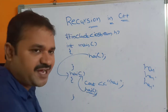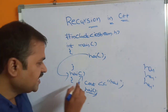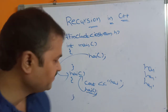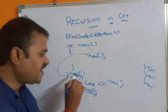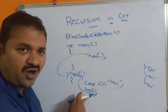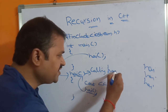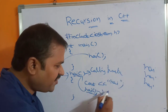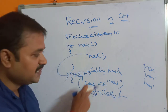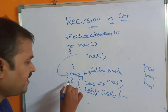Next, high function is called again, so once again control goes to the high function. This is called recursion. Recursion means the calling function and the called function must be the same. Here the calling function is 'high' because in the high function we are calling the high function. So the calling function is high and the called function is also high. If the calling and the called function both are same, then it is called recursion.